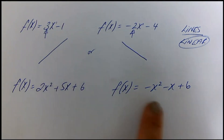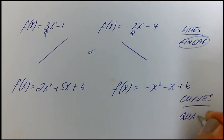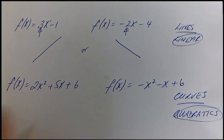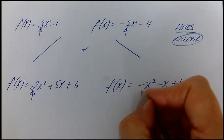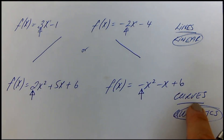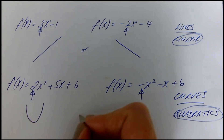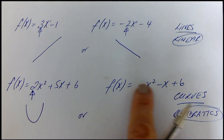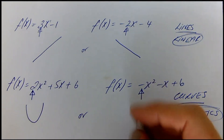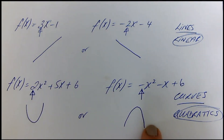Moving on to quadratics — these give you curves. You look at the number before the x² term. If that coefficient is positive, the curve is a U shape. If it's negative (technically minus 1 times x²), it's an N shape. So it's the coefficient of x² that tells you the shape of the curve.